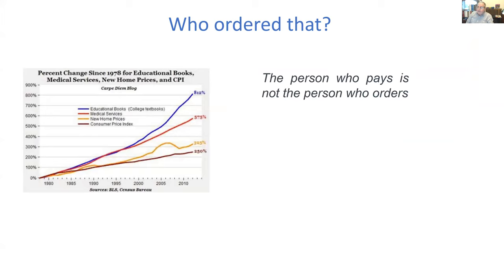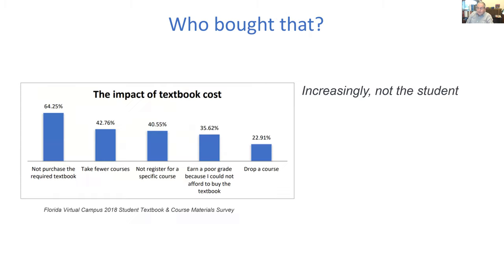You've all seen this and may see it 10 or 20 times this meeting. The question is: why are textbooks so expensive? And the answer is pretty much the same as why are drugs so expensive — because the person who pays for it is not the person who orders it. A physician will prescribe a drug for you. A faculty member, the teacher, the instructor — they order the textbook. And that explains a lot of things.